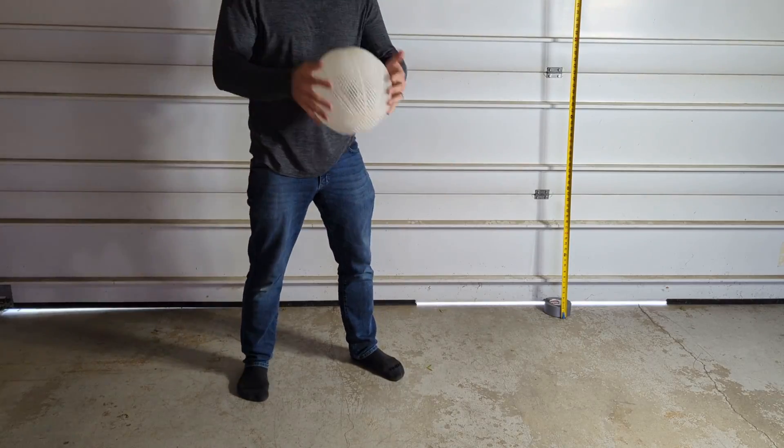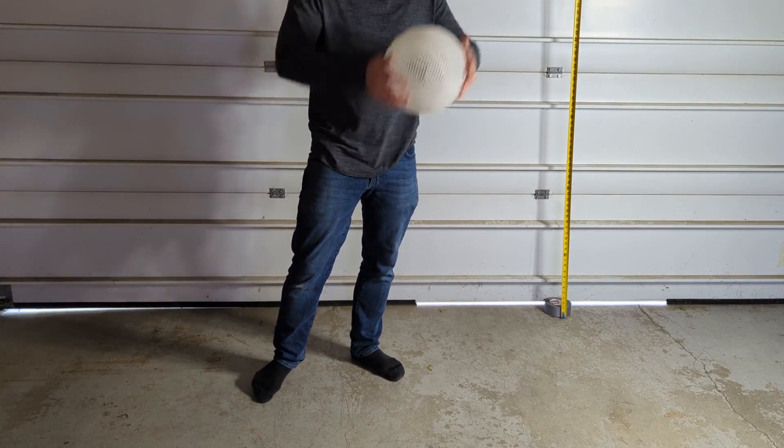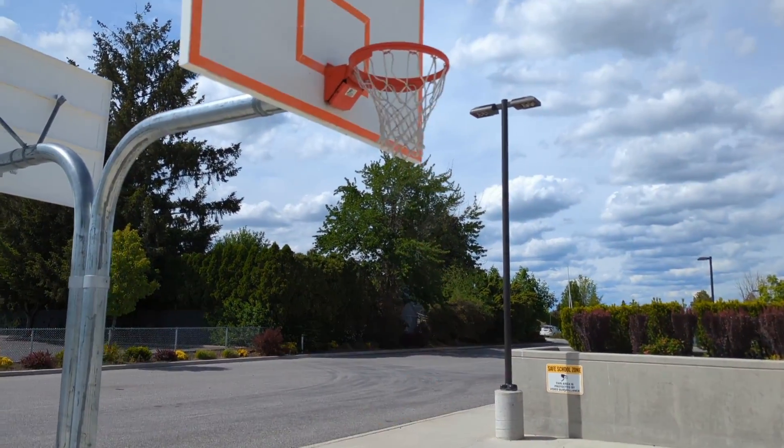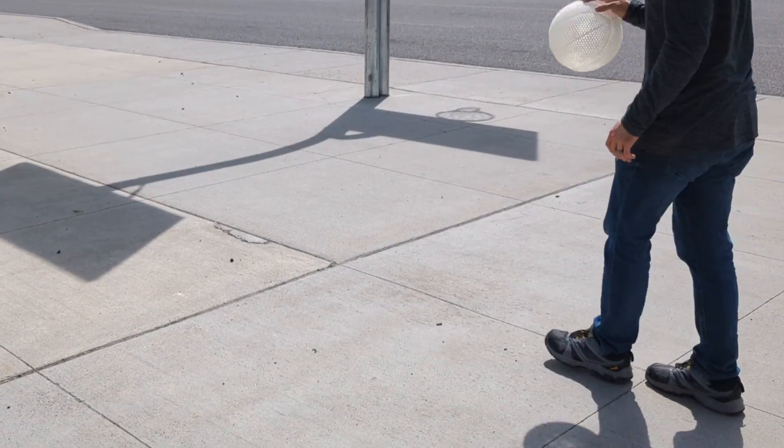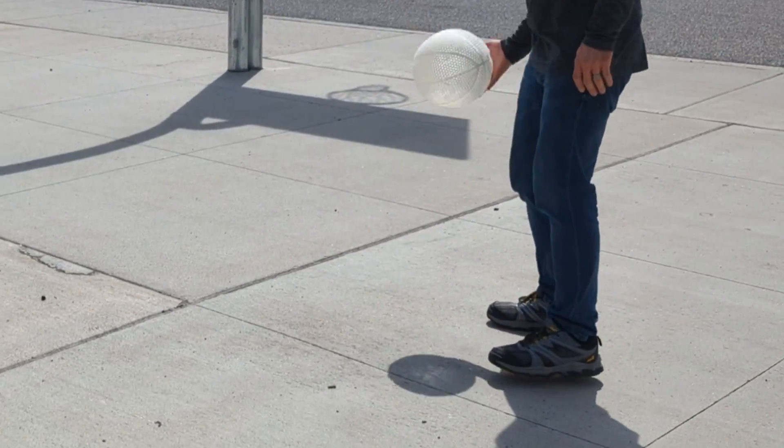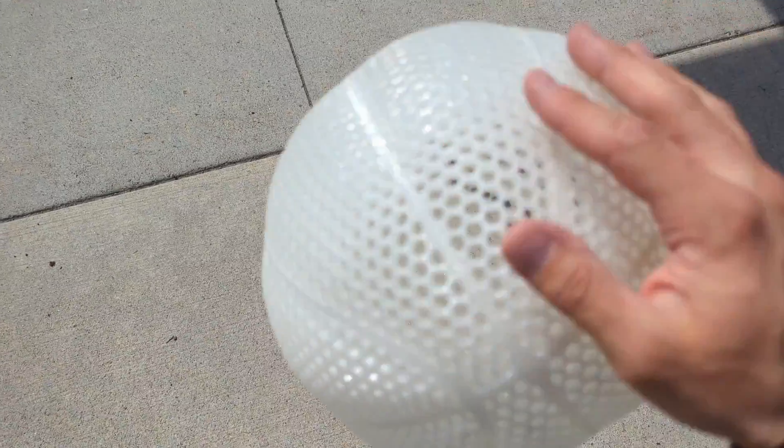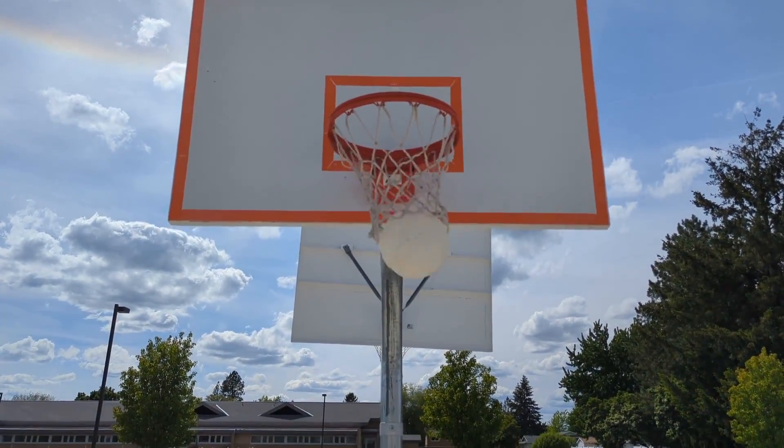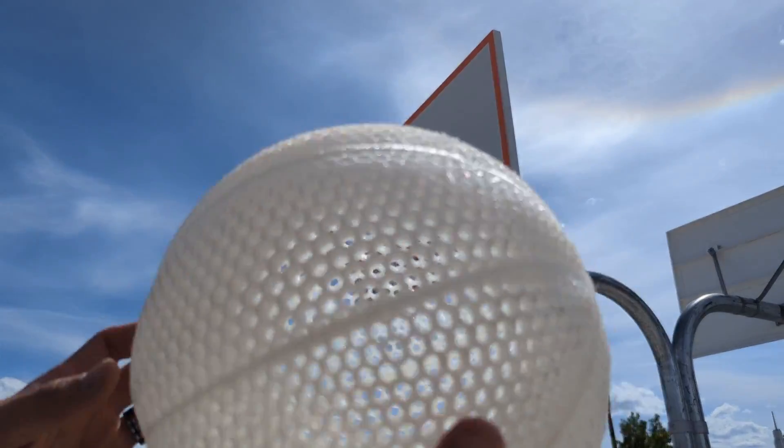Since the single lattice basketball survived so well, I decided to take it out to the basketball court and test it out there. So there's a shot with a regular basketball and here's what the single lattice basketball looks like dribbling on not an official court, but the closest thing that I could find. All right, here goes a shot. Let's see how great my basketball skills are.